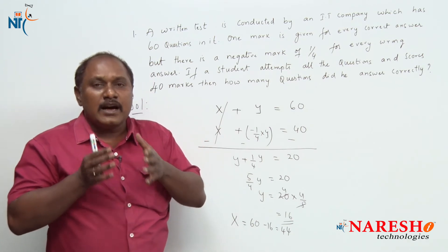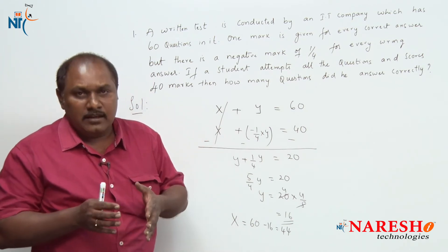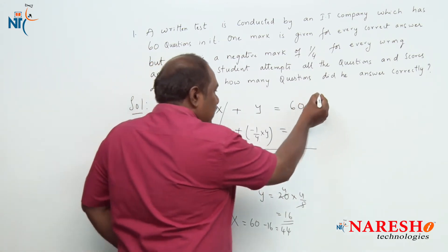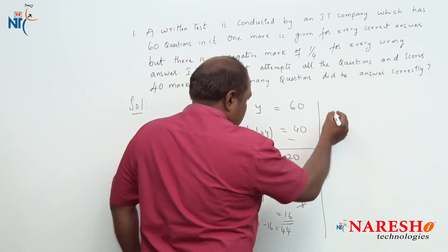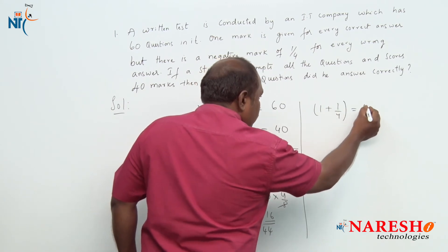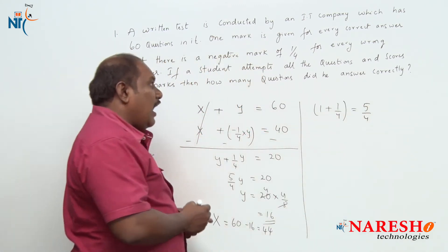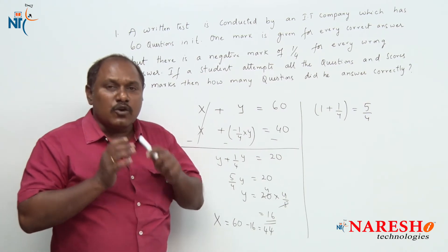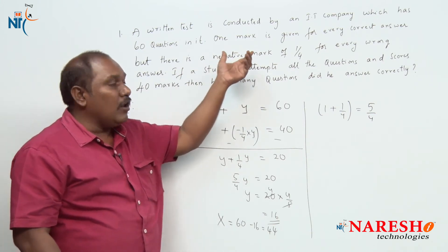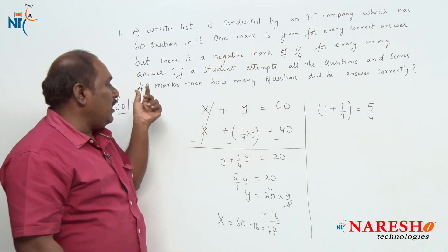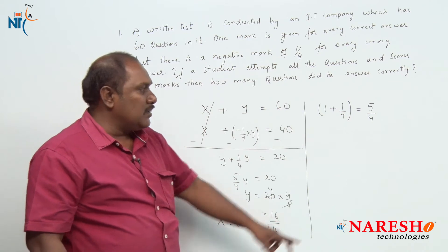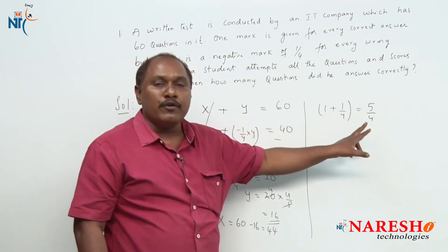So if a student answers a question wrongly, how many marks is he going to lose? Definitely, if he answers a question wrongly, he is going to lose 1 plus 1/4, that is totally 5/4. The student can score a maximum of 60 marks because he attempted all the questions, but he scored only 40 marks — that means he lost 20 marks. For every wrong answer he will be losing 5/4 marks.